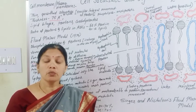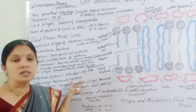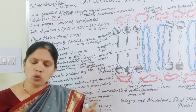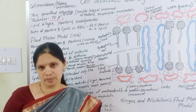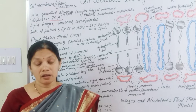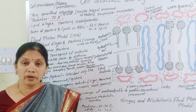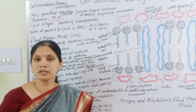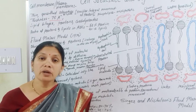The cytoplasm shows streaming movement, which is also called cyclosis. Along with these different organic and inorganic components and water, in eukaryotic cells, different membrane-bound cell organelles are present in the cytoplasm — such as chloroplast, Golgi body, endoplasmic reticulum, mitochondria, and nucleus. These cell organelles play a very important role in performing different functions.